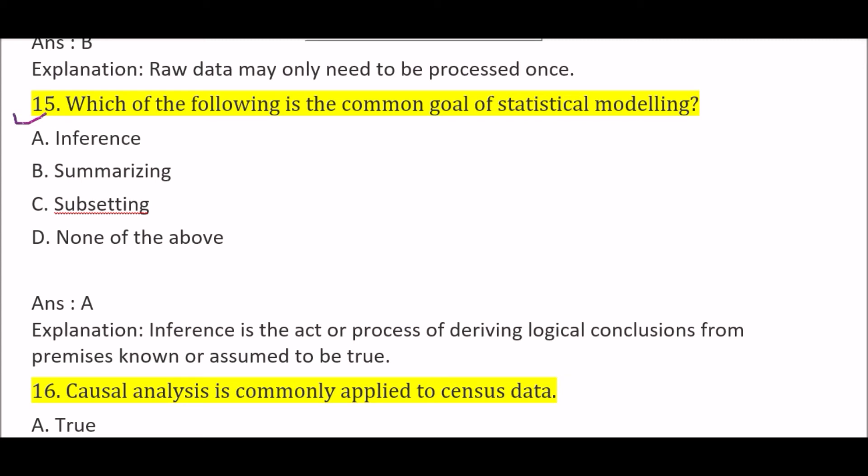Which of the following is the common goal of statistical modeling? Option A: inference, Option B: summarizing, Option C: subsetting, Option D: none of the above. The right answer is Option A, inference. Inference is the act or process of deriving logical conclusions from premises known or assumed to be true.